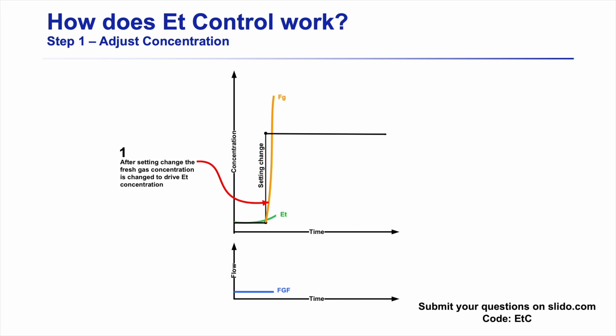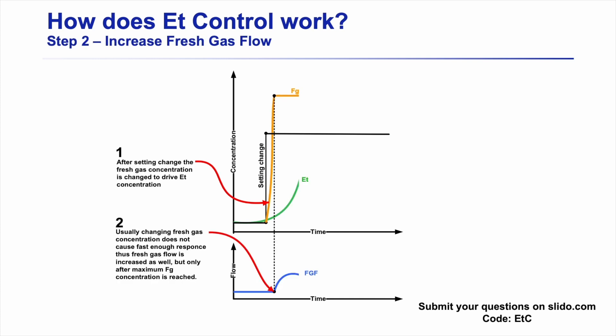What actually happens when you make a setting change? On the top we show the concentration — what the anesthetic agent vaporizer is doing — and on the bottom, the fresh gas flows. In step one, you set a new agent value and we open the vaporizer all the way. That's the same thing you would try to do if you're driving agent into the circuit — vaporizer all the way open while your fresh gas flow stays low. In step two, once the vaporizer is all the way open, we increase your fresh gas flow — two liters a minute, three liters a minute, something like that. We still put a lot of effort into keeping that fresh gas flow relatively low.